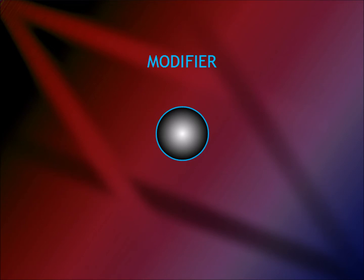The modifier is a syntactical element that changes the perspective of the sentence, or puts it into a certain context. In nearly all cases, the modifier will correspond to an adverb or adverbial clause.